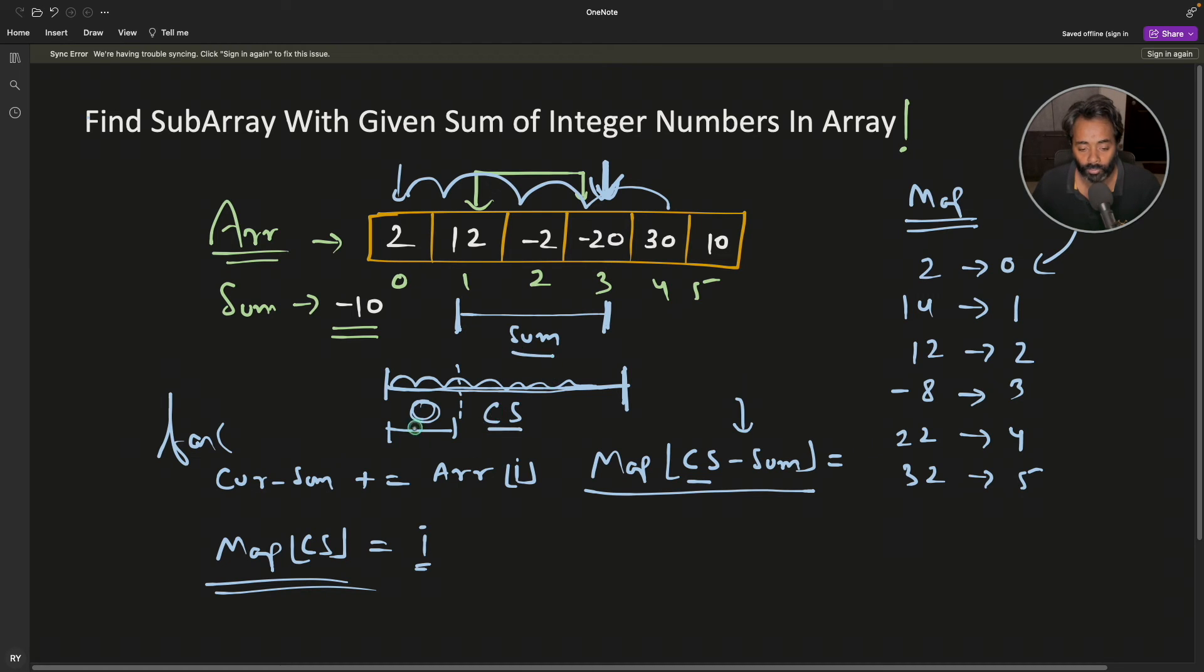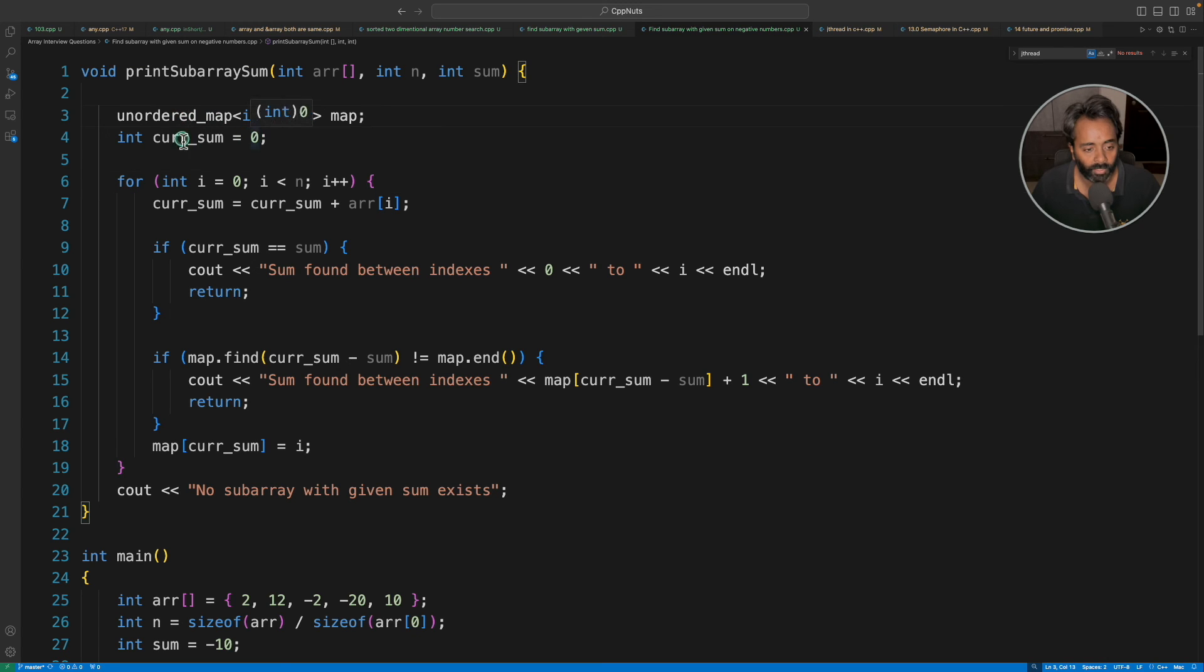Let's look at the code now. Code is very simple. We have unordered_map here, current_sum is initially zero obviously, and we'll just do current_sum = current_sum + array[i]. We'll check if current_sum has already reached to the sum. If it is, then we'll just simply print that and return.